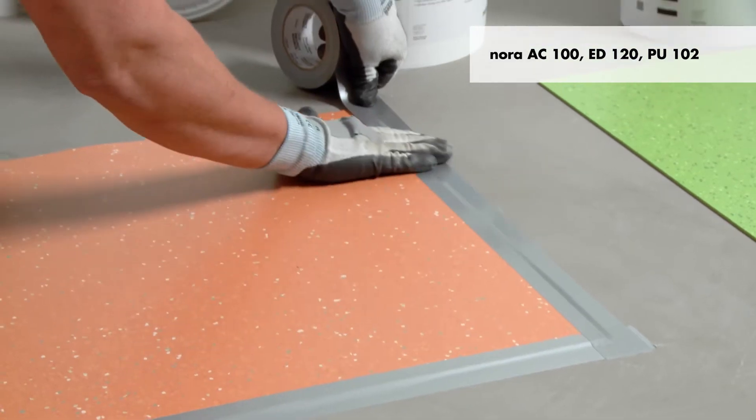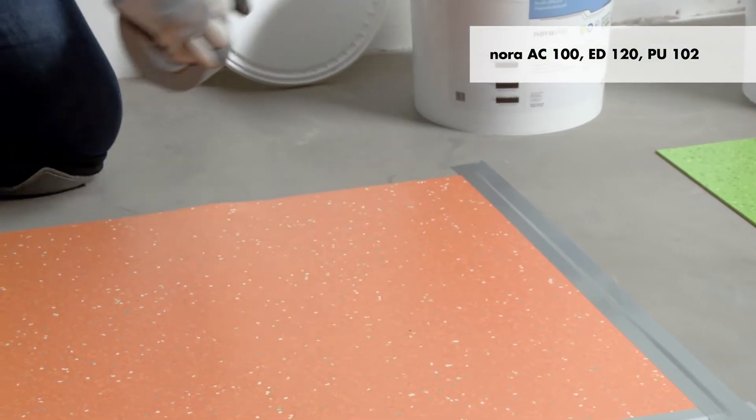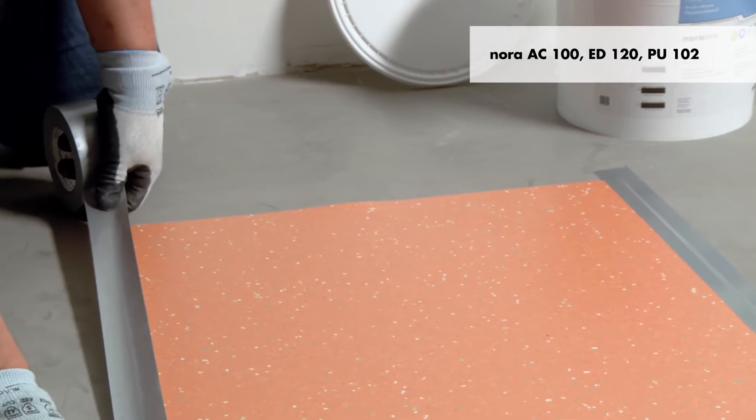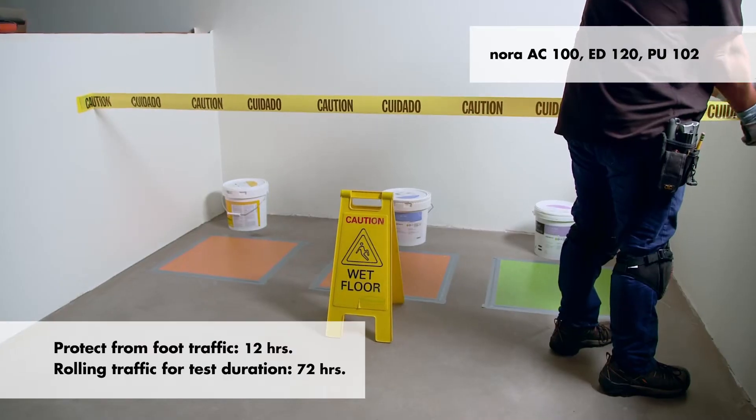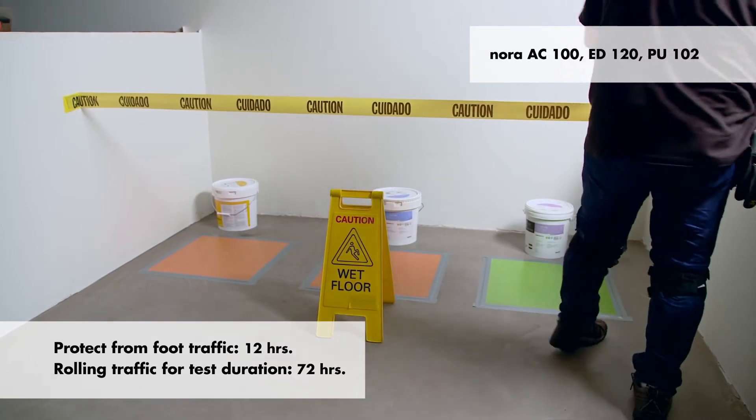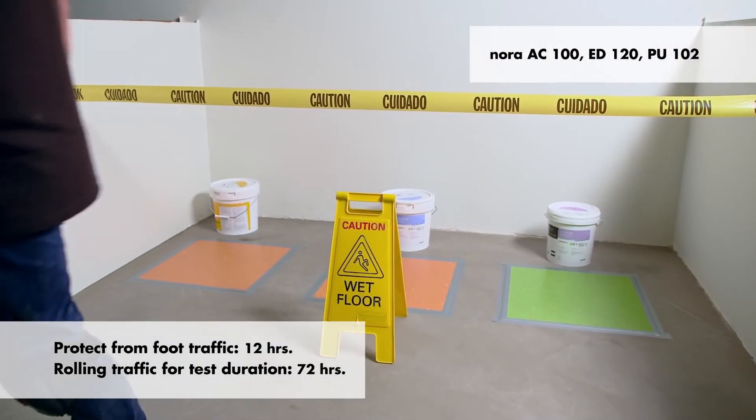Use duct tape or similar to seal the edges of the flooring test sample to the substrate on all sides and roll with a 100 pound roller. Protect the flooring from foot traffic for 12 hours and rolling traffic for 72 hours.